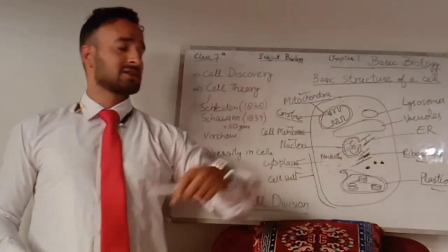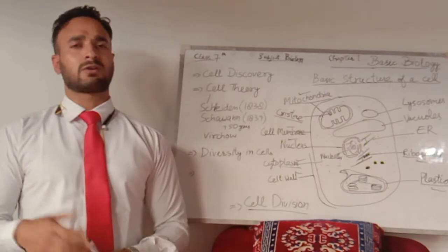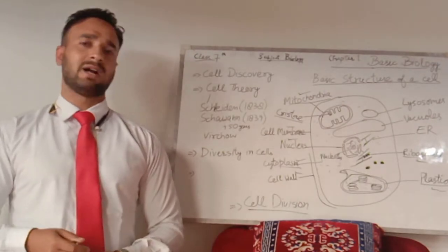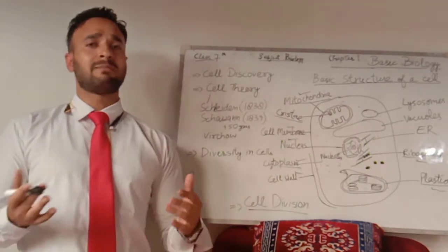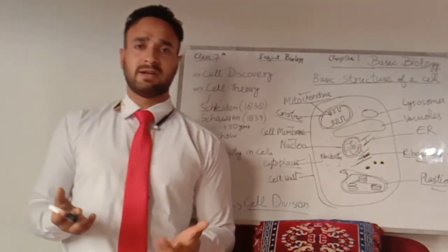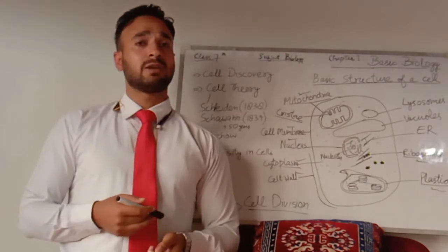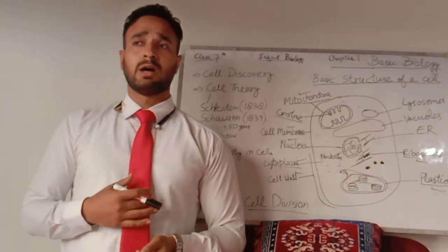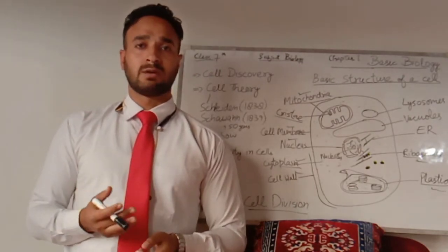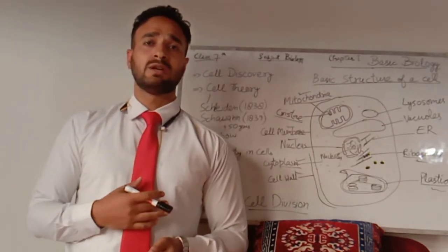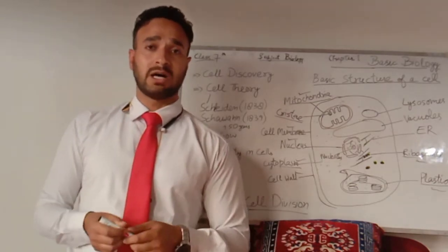Next are vacuoles, which are common to both plant and animal cells. Vacuoles may act as reservoirs to store food, and they also maintain the tonicity, or water potential, of the cell.